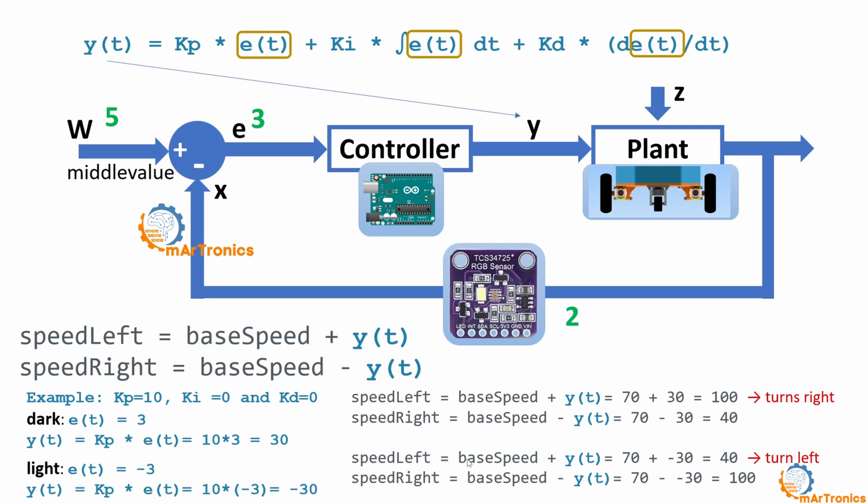If the sensor is located in the light place, then we will add minus 30 to both the right and left speed. So we have 70 plus minus 30 will become 40, and 70 minus minus 30 will become 100. This means the robot will rotate to the left. Thus, the speed of the two motors will be controlled according to the error measured by the sensor.